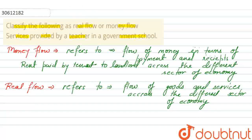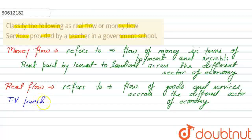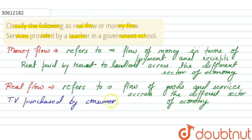For an example, you can say: TV purchased by consumer — a service is provided to the consumer. The money went to the firm. That is called real flow.